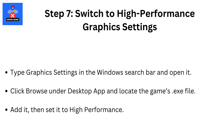Step 7: Switch to High Performance Graphics Settings. Type Graphics Settings in the Windows Search Bar and open it. Click Browse under Desktop App and locate the game's .exe file. Add it, then set it to High Performance.